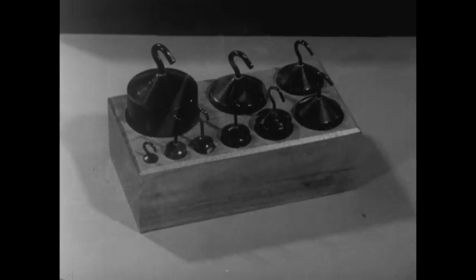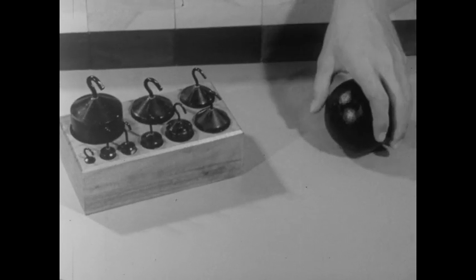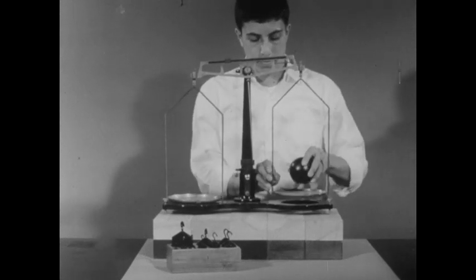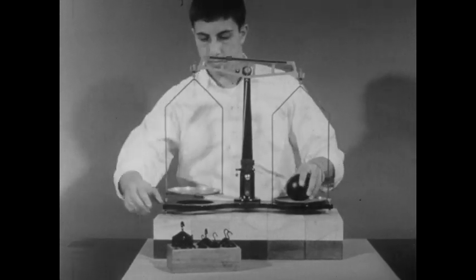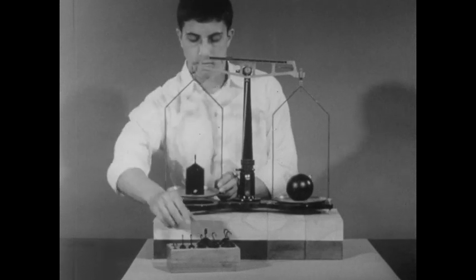Since weight depends upon position, if we wish to make an accurate comparison between masses, we should weigh them at the same place. To do this, we select an instrument appropriate for the job, the beam balance.